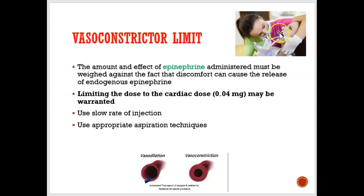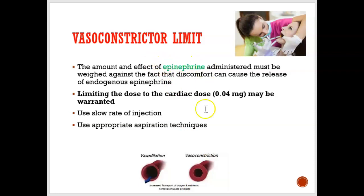When giving local anesthetic, one of the ingredients is a vasoconstrictor - epinephrine. We like to give epinephrine because when we do, the blood vessels constrict. You can see the vessel goes from dilated and open to small and constricted. The reason we like this is because when the blood vessels constrict, the numbness stays in that area for a longer period of time. Without epinephrine, the numbness goes away quickly.